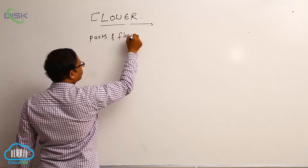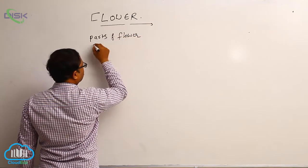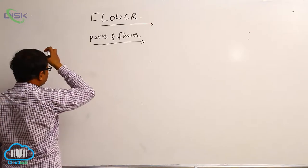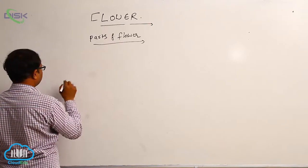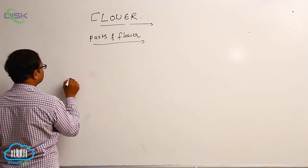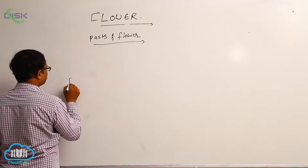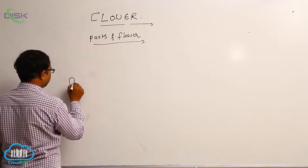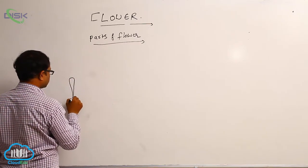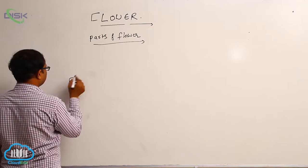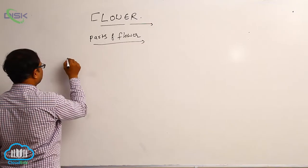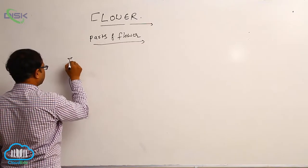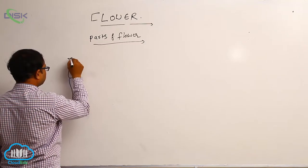Parts of flower. In parts of flower, we indicated that — I have also explained before. The swollen tip of the pedicle is known as the thalamus. At the center, it is the gynoecium part.